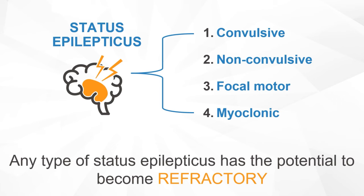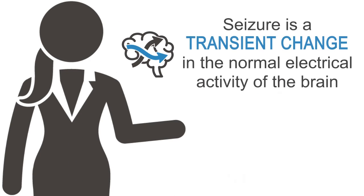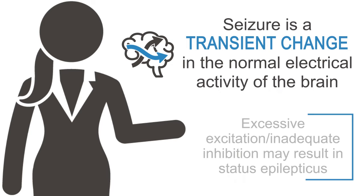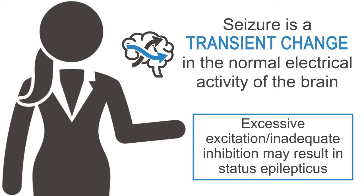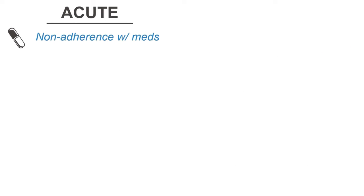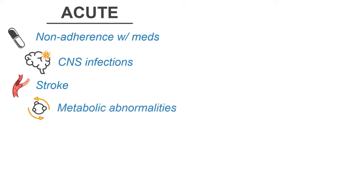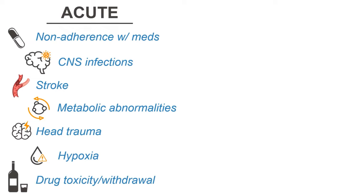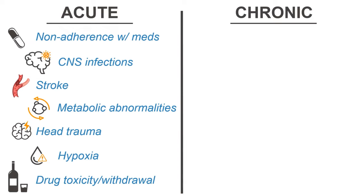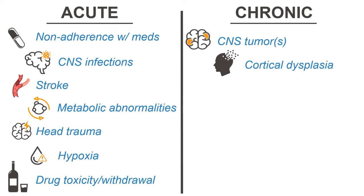Any type of Status Epilepticus has the potential to become refractory. A seizure is a transient change in the normal electrical activity of the brain. In the brain, excessive excitation and/or inadequate inhibition may result in Status Epilepticus. Etiologies may be divided into acute processes, including non-adherence with anti-epileptic medications, CNS infections, stroke, metabolic abnormalities, head trauma, hypoxia, drug toxicity, and withdrawal, as well as chronic processes such as a CNS tumor or cortical dysplasia, among others.